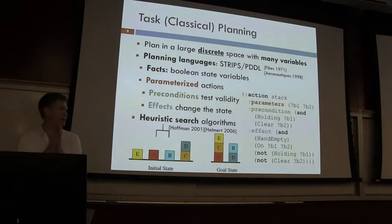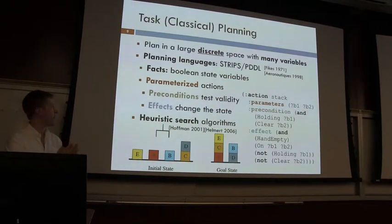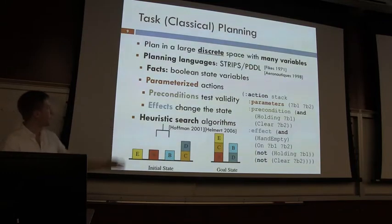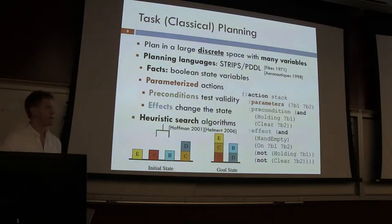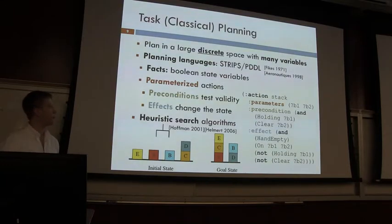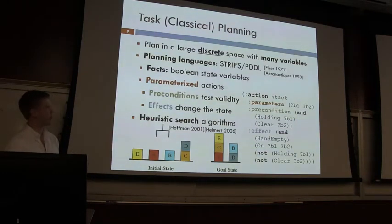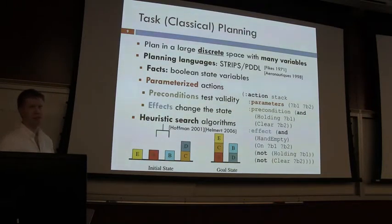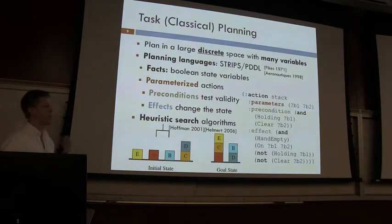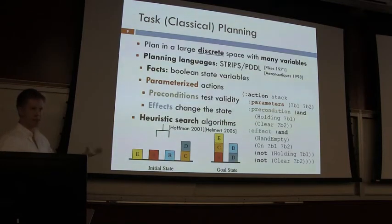This work builds on task planning — classical planning in the ICAPS community — and motion planning. The key aspect of task planning is planning in a very large discrete space with many variables, where the state space is intractable to enumerate due to the Cartesian products of all variable values. Many tasks are represented in factored action languages such as STRIPS or PDDL, which represent state as a set of facts — things like whether an object is on something else, whether something is in the hand — and actions are described with preconditions and effects. These fact representations allow more sophisticated algorithms than breadth-first search: relaxations to estimate distance heuristics and SAT solvers.